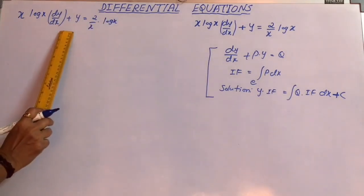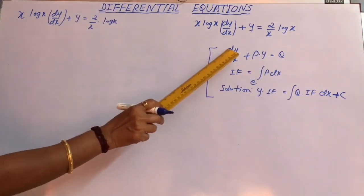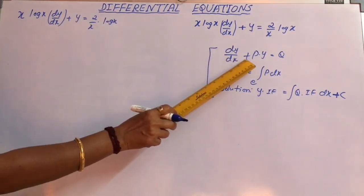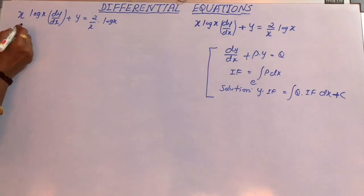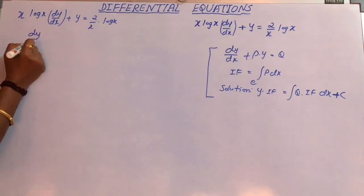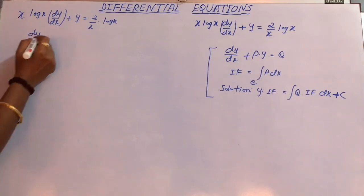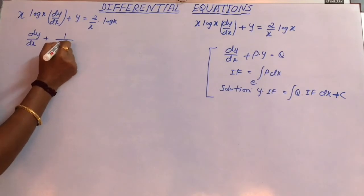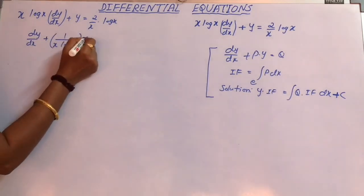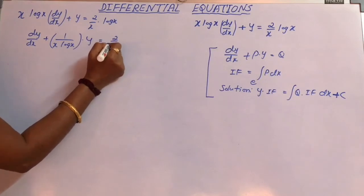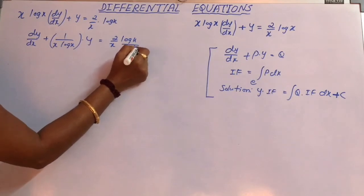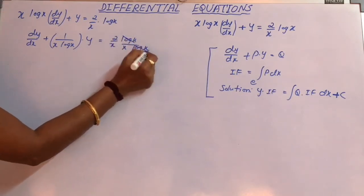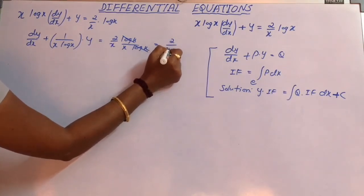Let us reduce this equation to the standard form dy/dx + Py = Q. To do so, divide the equation by x·log(x). This gives dy/dx + (1/(x·log(x)))·y = 2/(x·log(x)) divided by x·log(x), which simplifies to 2/x².